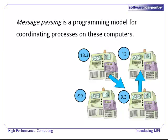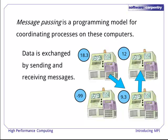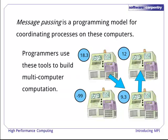Message passing is one programming model which has proven very useful for arranging computations on multiple computers. In message passing, each process has its own data which can't be seen by the other processes. When data needs to be communicated, the processes send and receive messages to and from one another. From these basic communication primitives, scientific programmers can build up multi-computer computations.